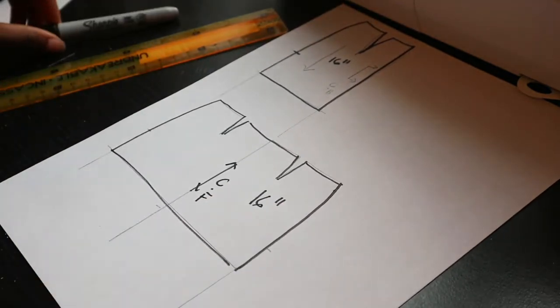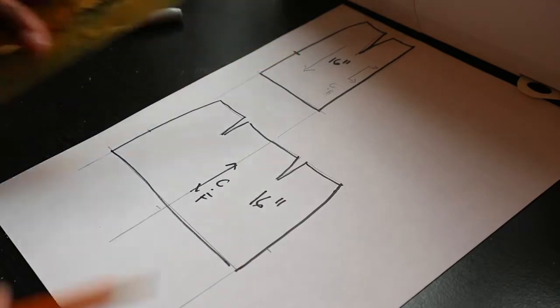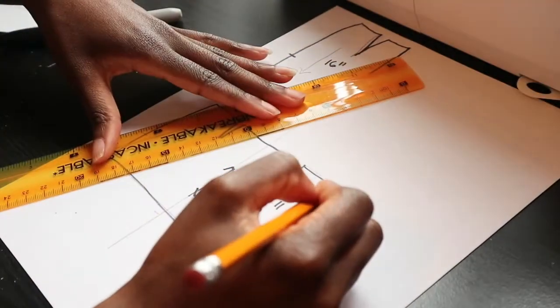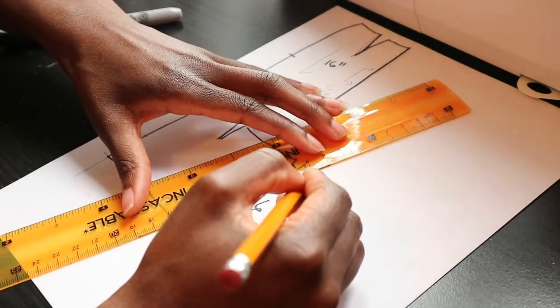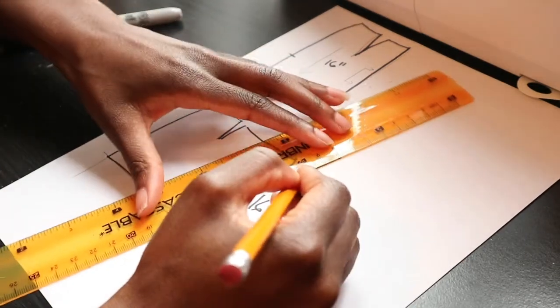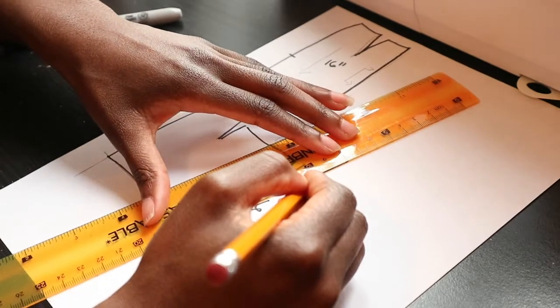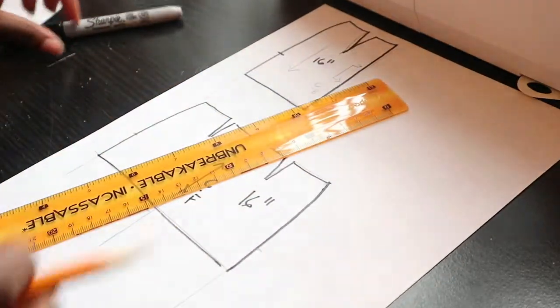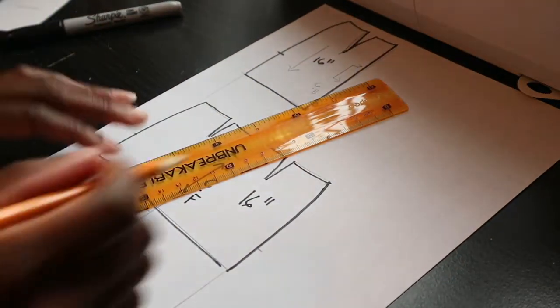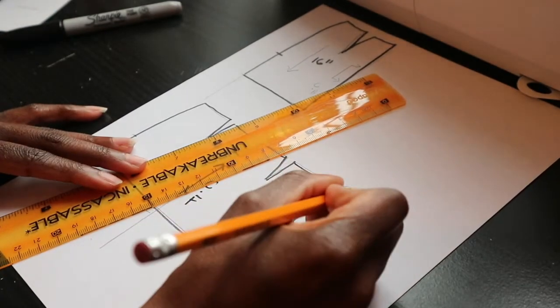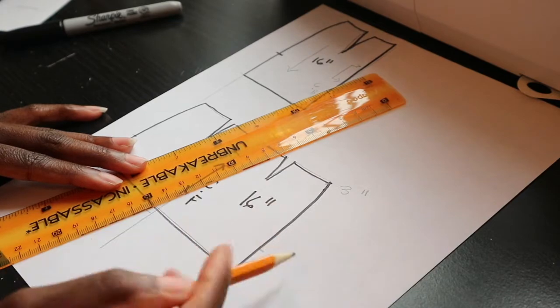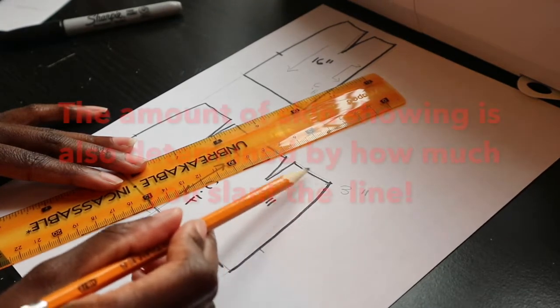Once you have that all traced out, you want to start to determine where you want your wrap portion to begin. I was trying to figure out if I would have enough coverage if I went out three inches or two inches. I wasn't sure how far out I wanted it to go, so I'm trying to think of where I want my coverage to be.